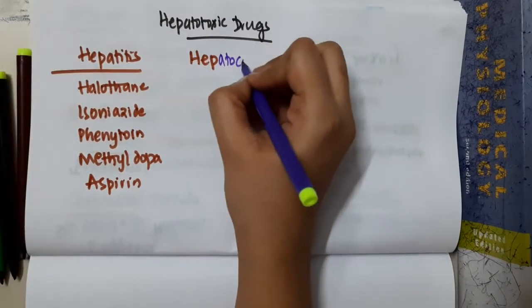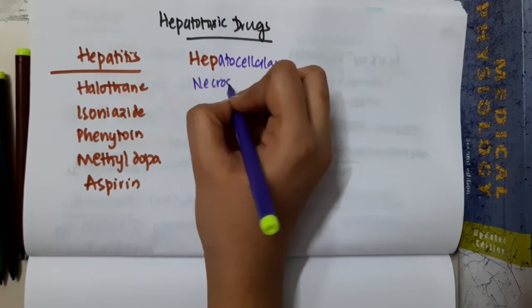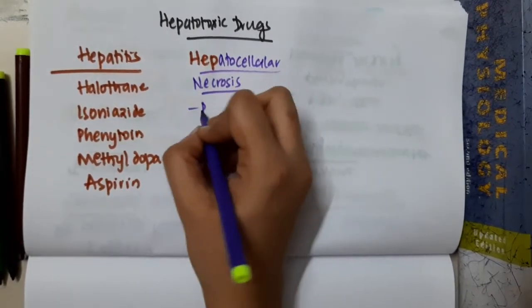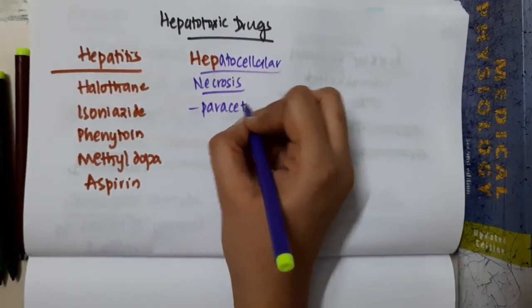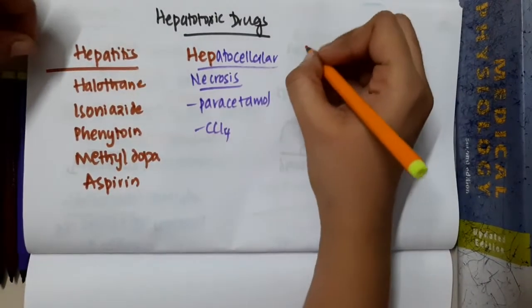What are the drugs which cause hepatocellular necrosis? These include paracetamol and calcium tetrachloride.